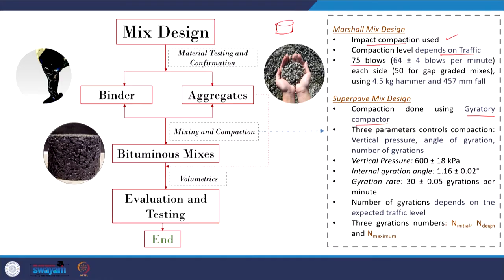Additional specifications include a rate of impact in the range of 64 ± 4 blows per minute. The number of blows also depends on the mix type — for stone mastic asphalt, a gap-graded mix, only 50 blows are required since additional blows can cause aggregate breakage. The standard compaction uses a 4.5 kg hammer with a 457 mm fall. A modified compactor is used when maximum aggregate size exceeds 25 mm.